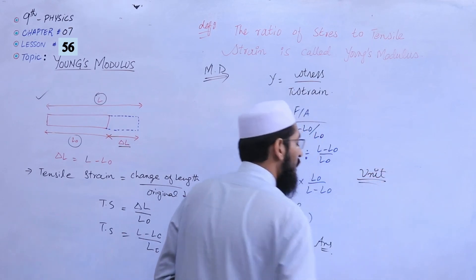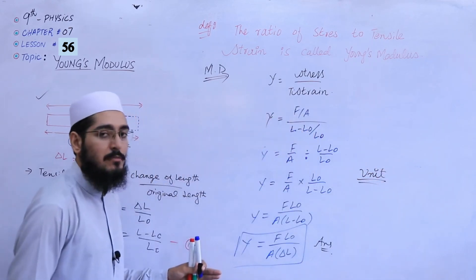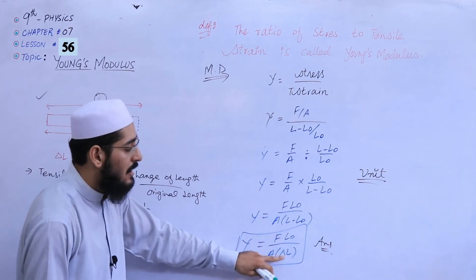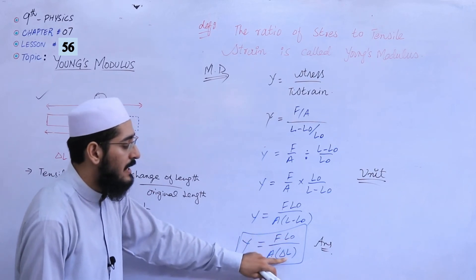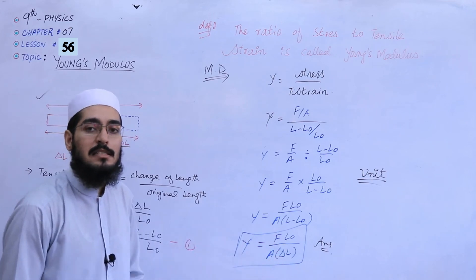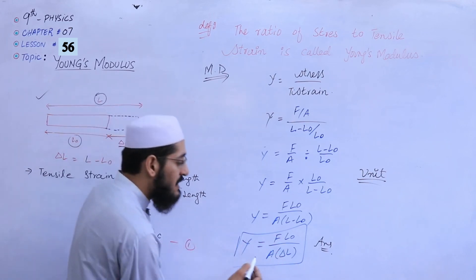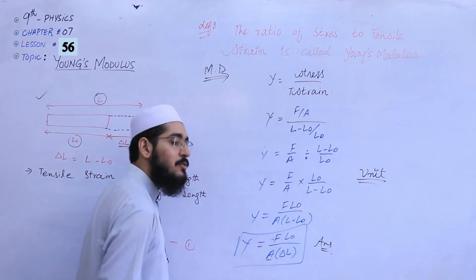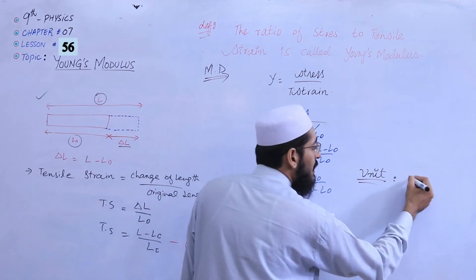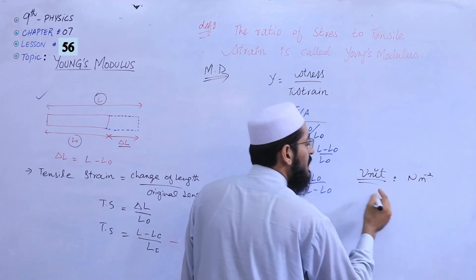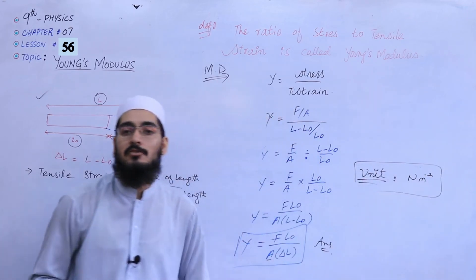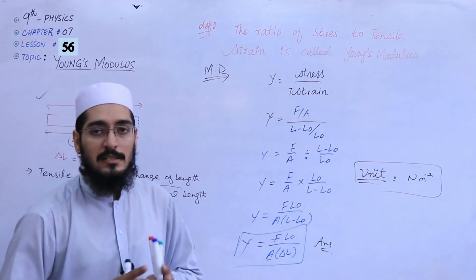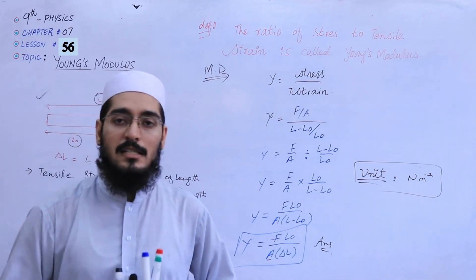The single thing that is left is the unit of Young's Modulus. In the formula, the key terms are F and A. Since stress is force per unit area, the unit of Young's Modulus is Newton per meter square. I hope you understand your long question. See you in the next lecture.